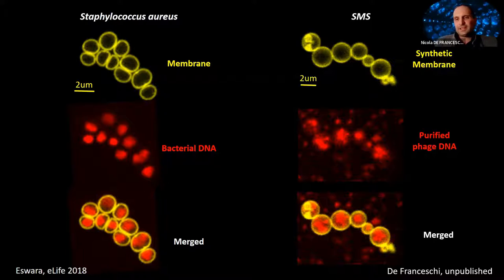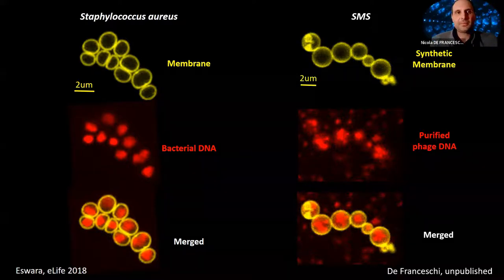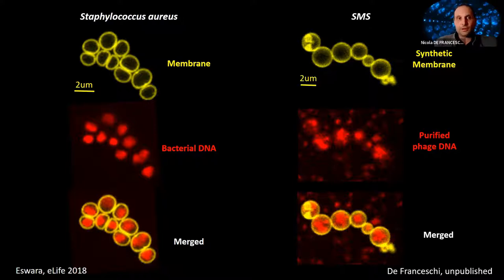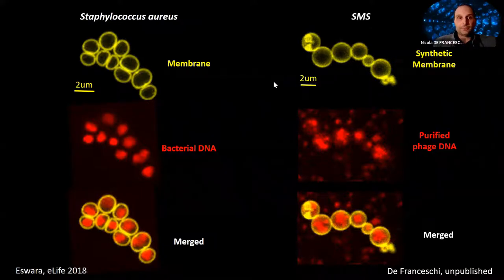Encapsulating DNA is a relatively easy task because lambda DNA does not really interact with the membrane. It is much harder to reconstitute proteins that bind the membrane, because these proteins affect both the liposome formation process and the process of membrane deformation. However, with the SMS this is possible, and this is what we'll focus on for the rest of the presentation.